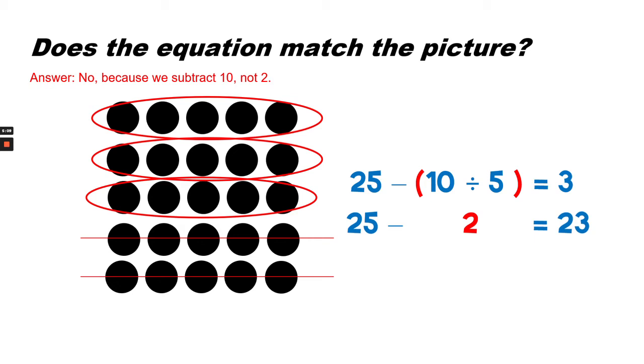So looking at this equation, we would first divide 10 divided by 2. We know that 5 goes into 10, 2 times. So we would do that first. Then we would take 25 minus 2 equals 23. And that does not match the picture.